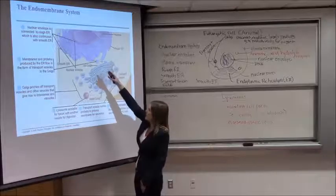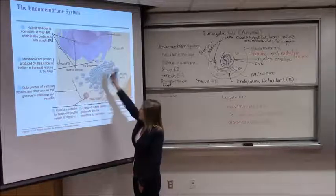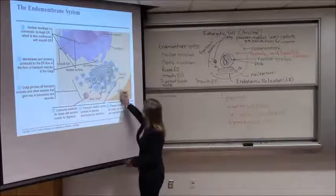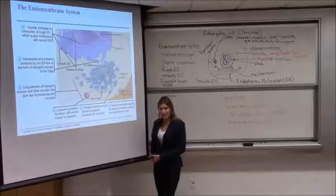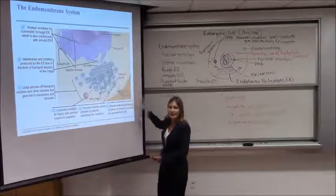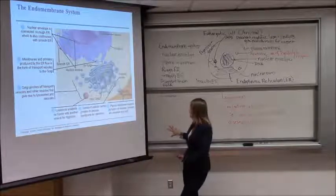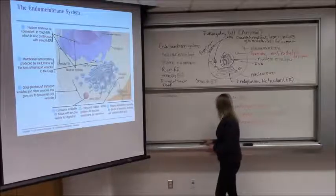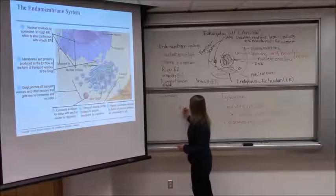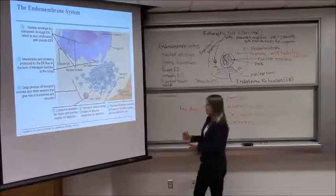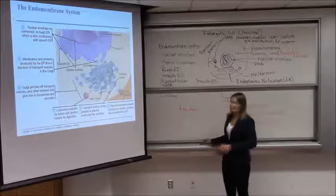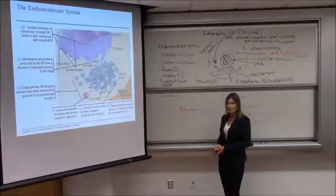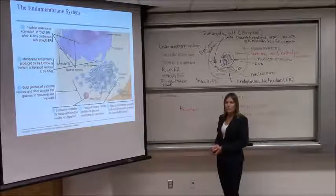So this is the endomembrane system all together: the nuclear envelope connected to the ER, transport vesicles that break off from rough and smooth ER and also from the Golgi. Ultimately, those transport vesicles can fuse with the plasma membrane — membrane fuses with membrane — and those products are released from the cell. That's called exocytosis, which we'll cover in more detail when we talk about the plasma membrane. This is materials wrapped in membrane leaving the cell. That's the endomembrane system. We have a couple of other important cell parts not part of this system, and we'll talk about those next.